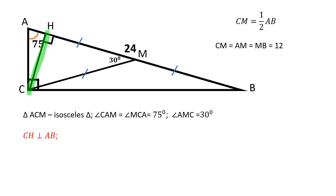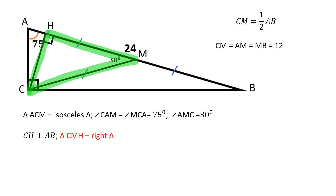Let's draw the altitude CH from the right angle to the hypotenuse. Triangle CMH is a special right triangle. Its angles are equal to 30, 60, and 90 degrees.